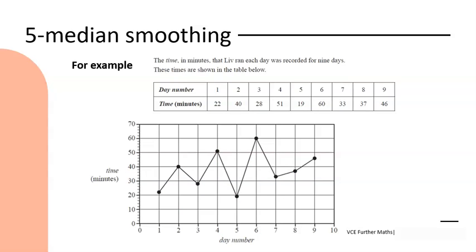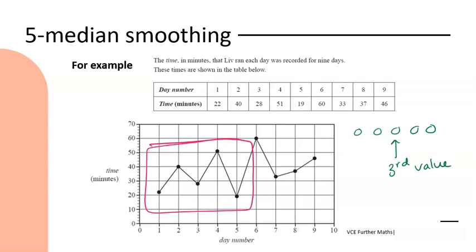Five-median smoothing is exactly what you might think - we are now working with groups of five data points. Starting at day one and counting one, two, three, four, five data points, I'm working with this group of data. With five values, the median is going to be in the middle - it's actually going to be the third value, or the third point that I hit in order. The same applies when we're working on our vertical scale - with five points, the third value is going to be where your median point is.